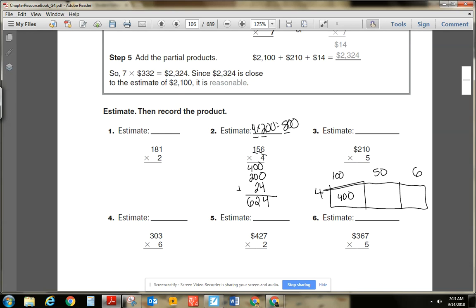Or I do 4 times 5 tens. Or 4 times 50. And that would give me 20 tens. Then I do 4 times 6 is 24. So 400 plus 200 plus 24. 400 plus 200 plus 24. Gives me a final product of 624.